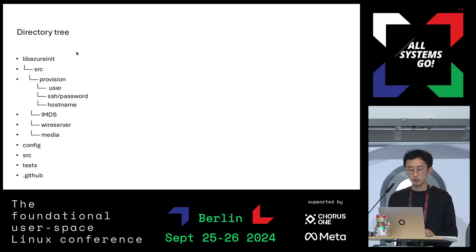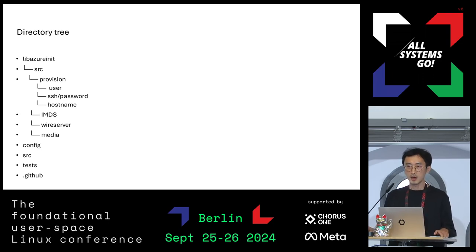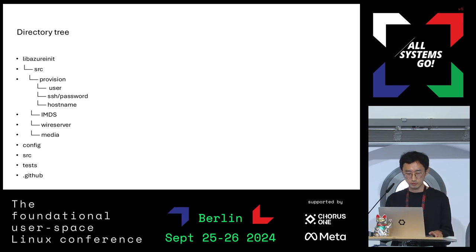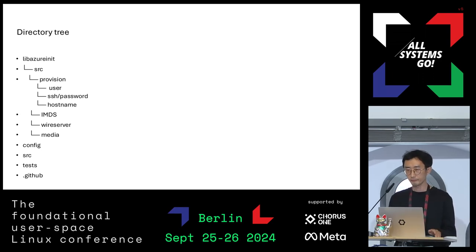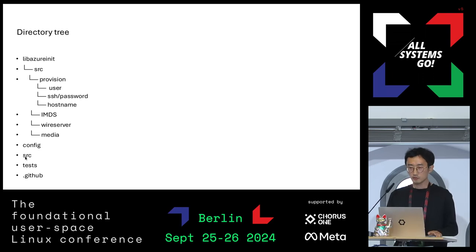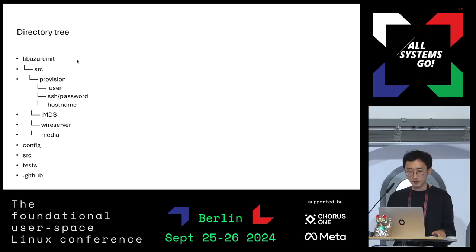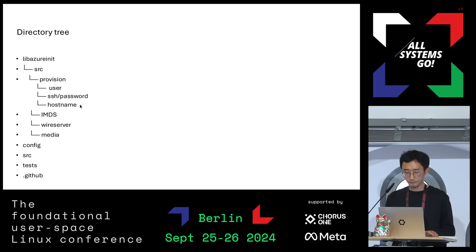The Azure Init source code consists of two big paths: lib-azure-init and the actual binary, SRC. Lib-azure-init consists of the common library path, which will probably be shared by other projects in the future, so it consists of many public functions and maintains a consistent API design. The SRC is just a small main binary linked against the common library. Lib-azure-init itself has several parts: provisioning, configuring user and group, SSH key, password, hostname, and so on.